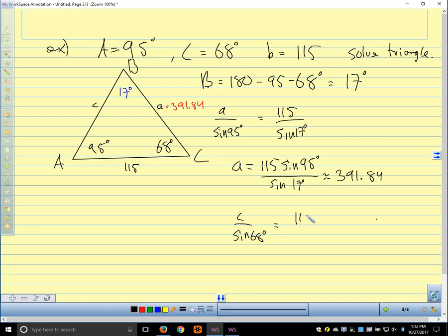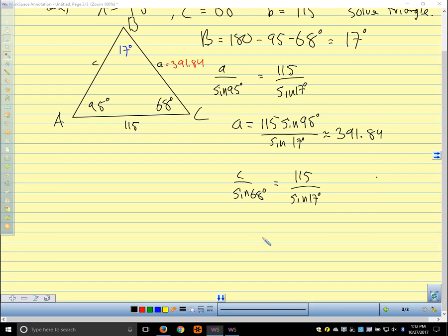There we go. All right. There's our calculation. Plug that into your calculator, and you get that that is about 364.69. All right. Questions on this example? Law of Sines, friendly, nice, easy to use. Let's talk about why it works.